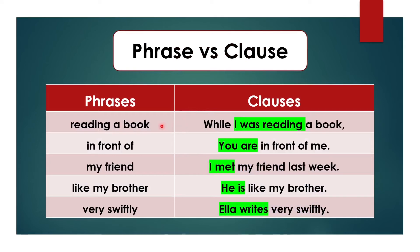Now I'll give you more examples side by side showing how to identify a phrase versus a clause. 'Reading a book' is a phrase — no subject-verb combination and no complete meaning. On the other hand, 'while I was reading a book' is a clause — 'I' is the subject, 'was' is the auxiliary verb, 'reading' is the -ing form of 'read,' though it is not expressing a complete meaning as it works as part of another sentence. 'In front of' has no subject-verb combination, so it is a phrase. But 'you are in front of me' — 'you' is the subject, 'are' is the verb — so this is a clause.